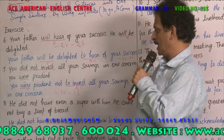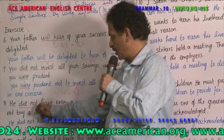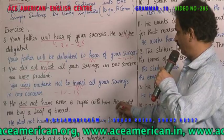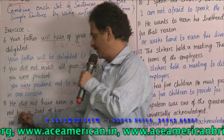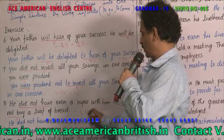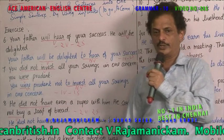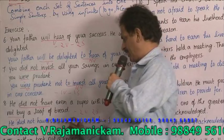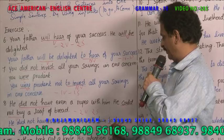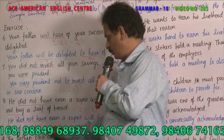Example 3: 'He did not have even a rupee with him' — 'did not have' is the verb. 'He could not buy a loaf of bread' — 'could not buy' is a verb. Two verbs, two sentences. Combined: 'He did not have even a rupee with him to buy a loaf of bread.' 'To buy' is an infinitive, not a verb. One verb, one sentence.